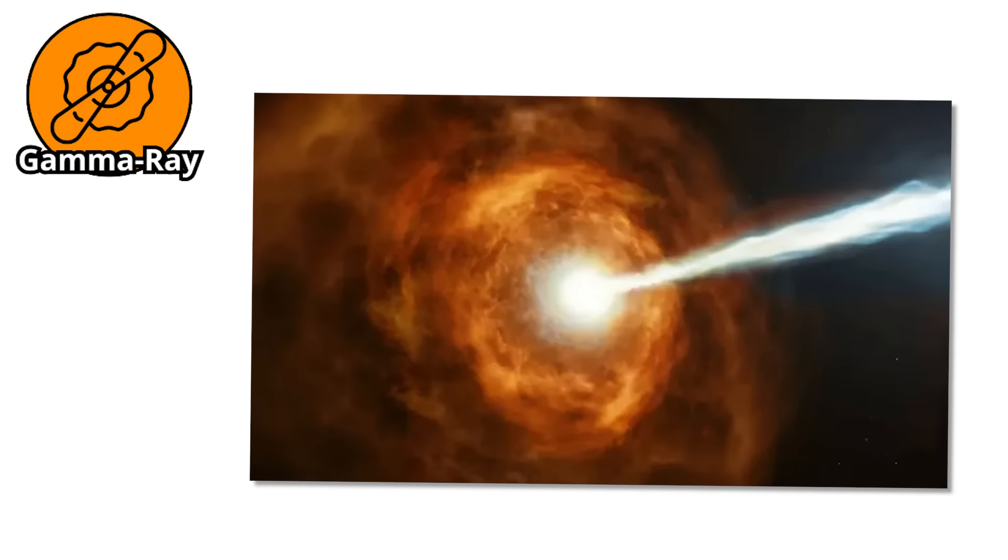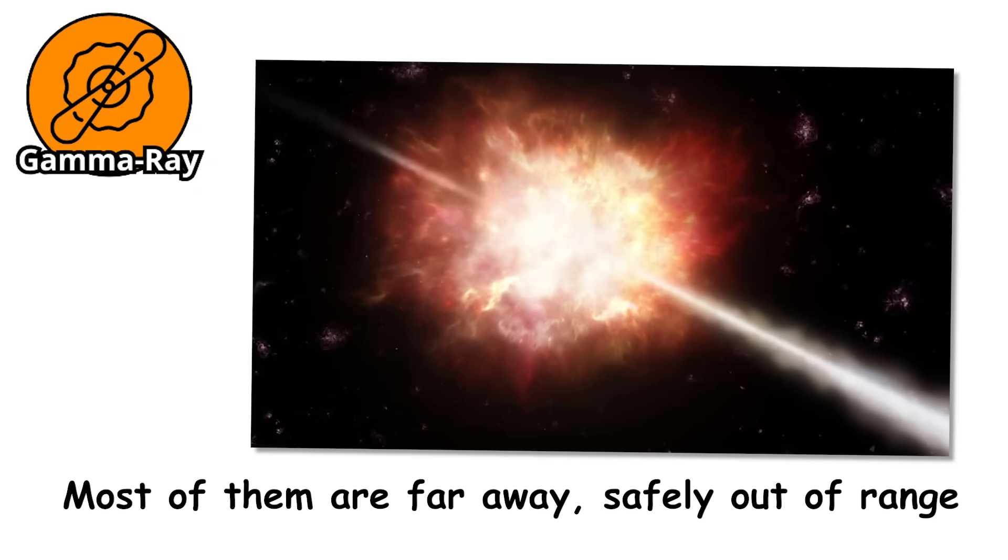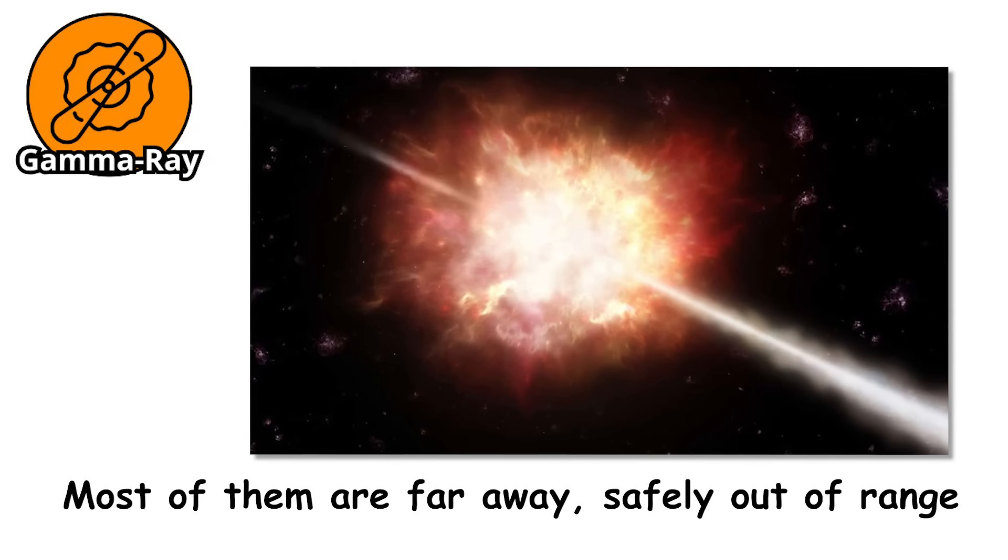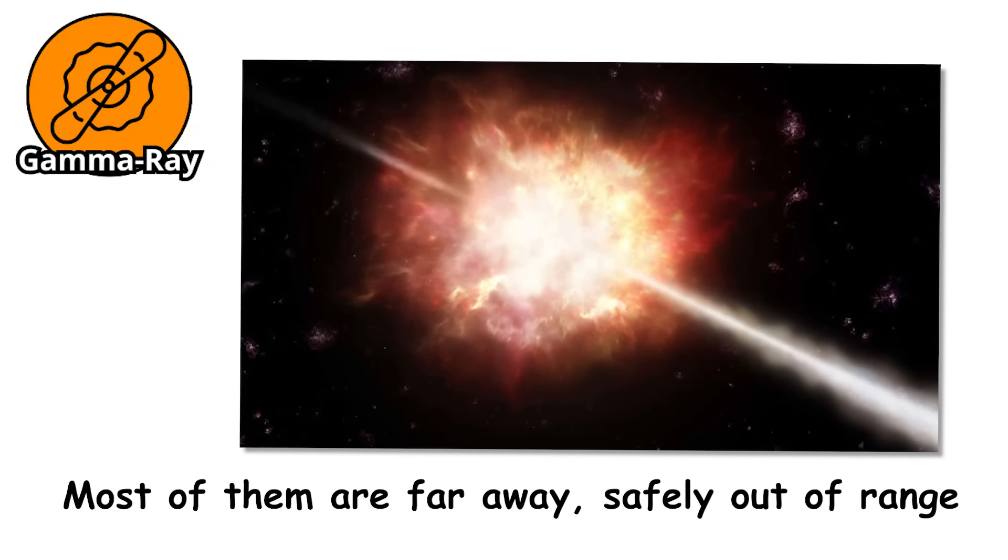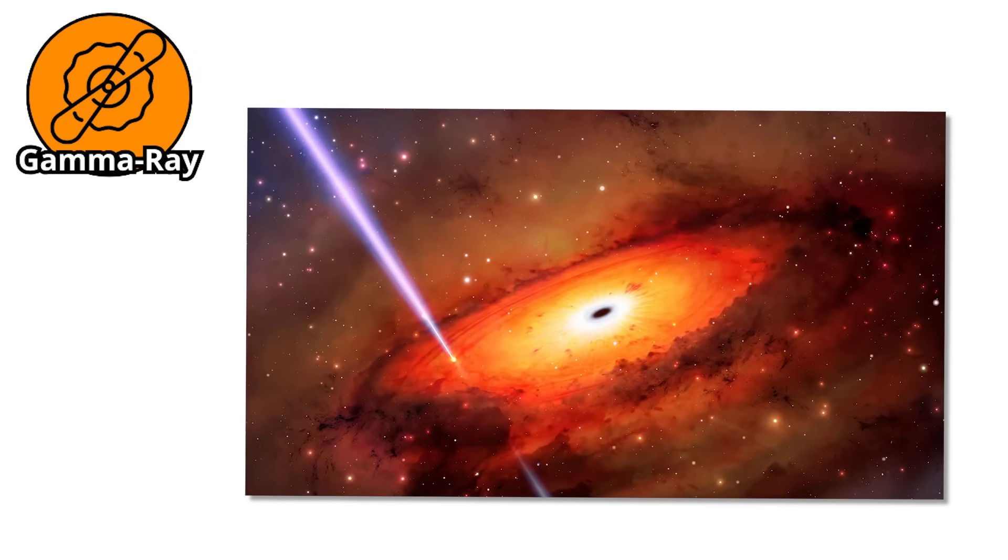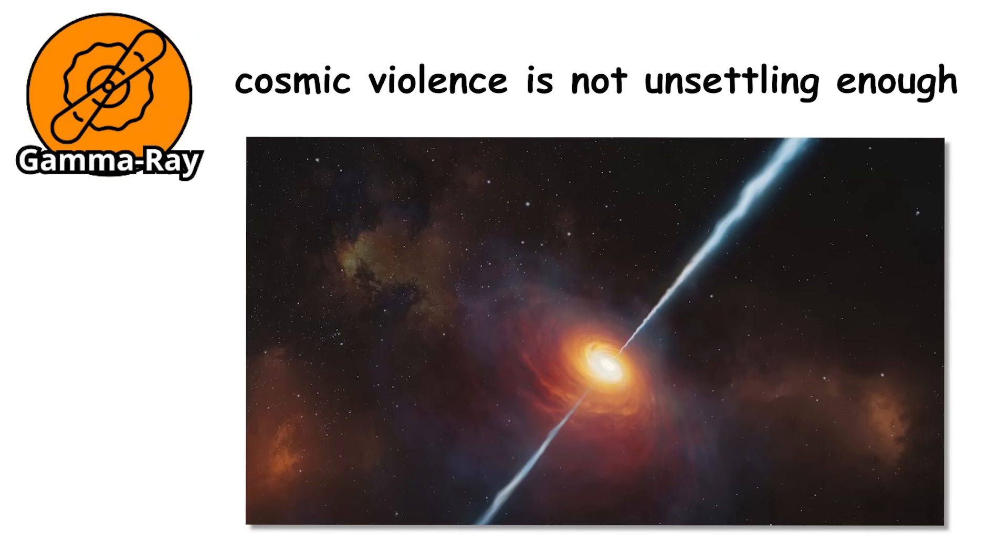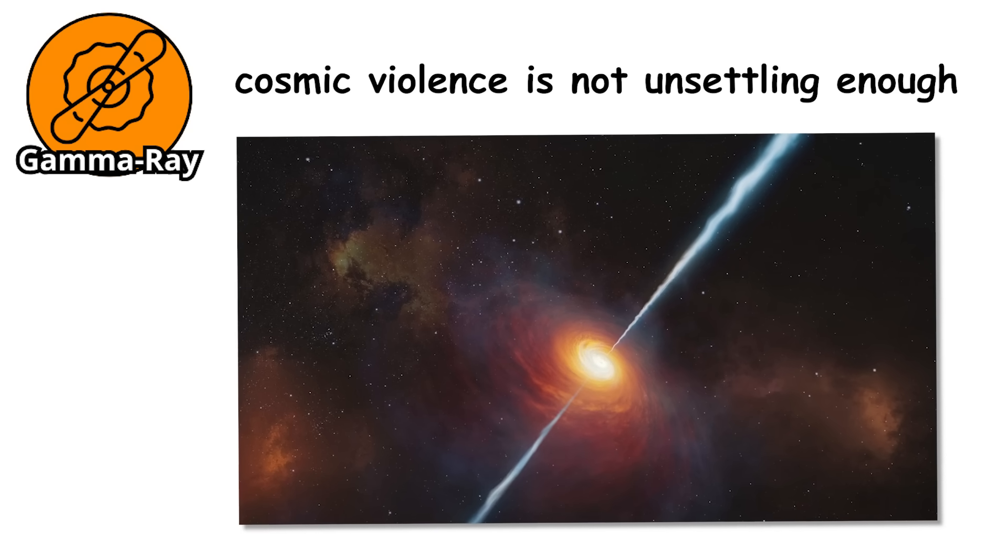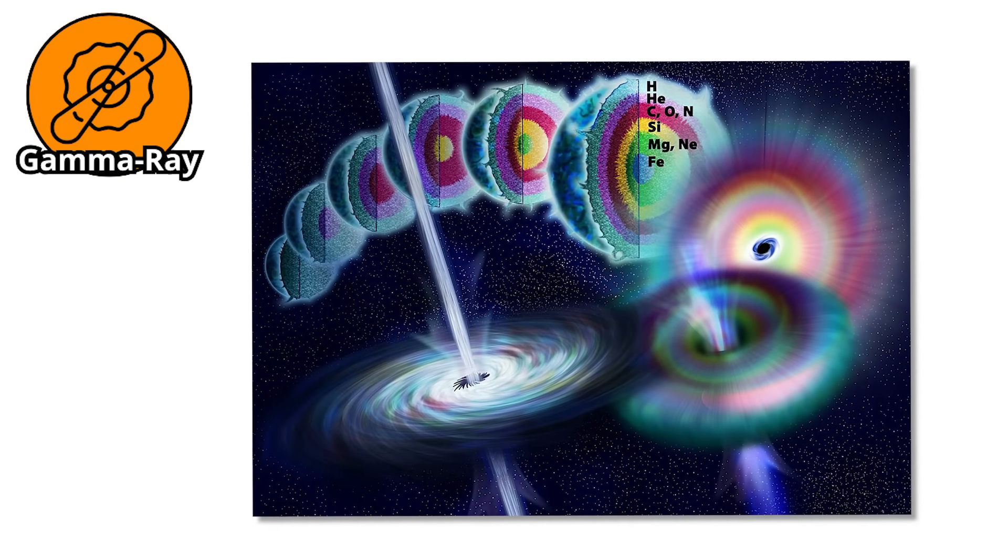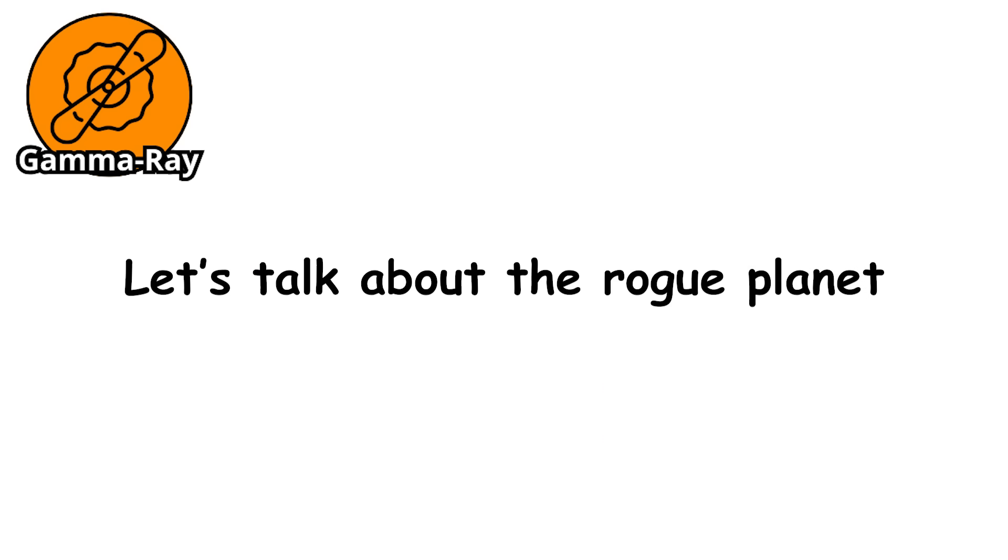And these things are not rare. They happen somewhere in the universe almost every day. Most of them are far away, safely out of range. But the fact that they exist at all keeps astronomers constantly watching the skies. You cannot hide from a Gamma Ray Burst. You cannot outrun it. You probably would not even see it coming. But if sudden cosmic violence is not unsettling enough, our next destination takes a darker turn. What if you were stranded in space, not by death, but by endless isolation? Let's talk about the Rogue Planet.